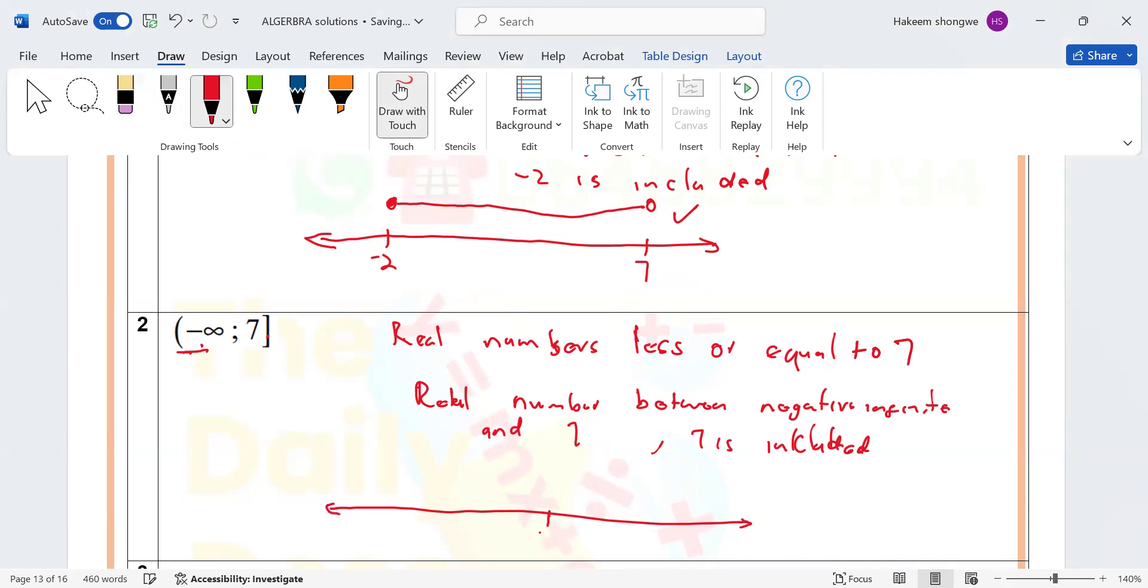Right, so you're going to have your seven here. As soon as you have your seven here, negative infinity, you are coming from the negative side. So you are always going to say we are coming from here and then we are going to shade seven.